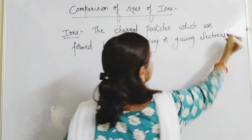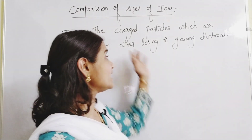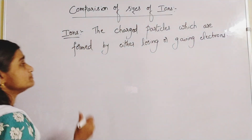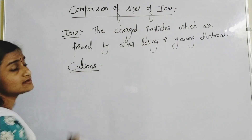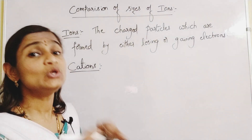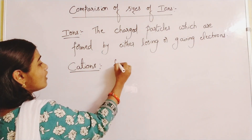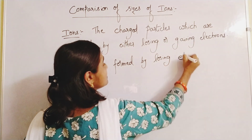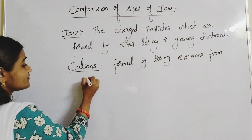Please remember — sometimes they may ask the definition for ions. Ions are formed by either losing or gaining electrons. The species which are formed by losing electrons are called cations. Cations are the charged particles which are formed by losing electrons from atoms.